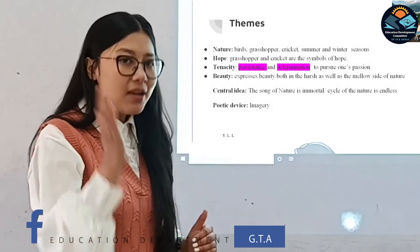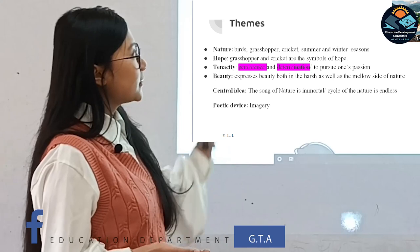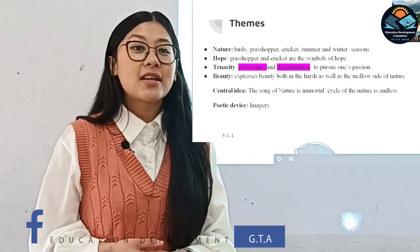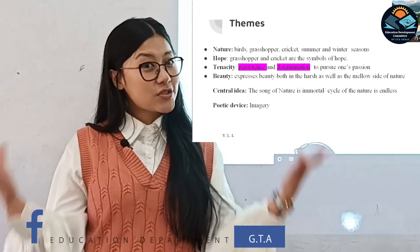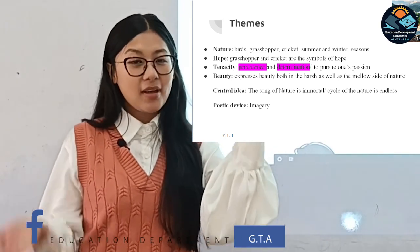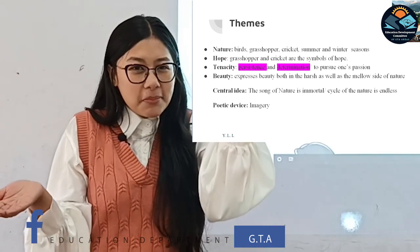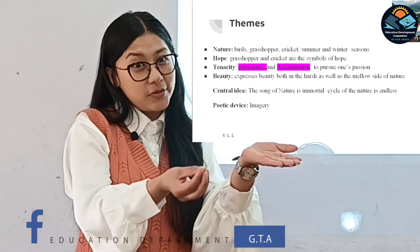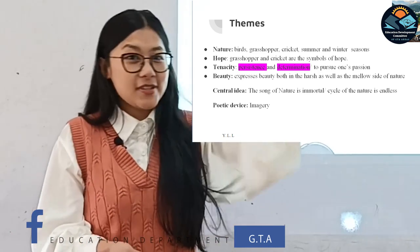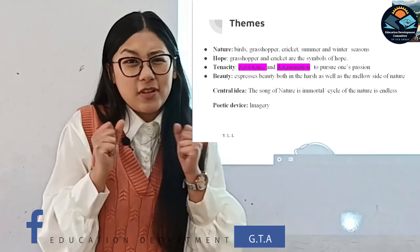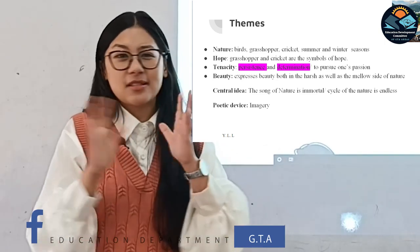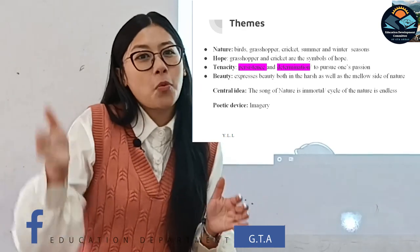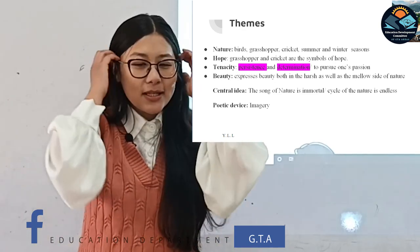Symbolically, the grasshopper and cricket are symbols of hope. Keats has presented two extreme seasons — summer and winter. In the heat of summer when you don't feel like doing anything, it is the grasshopper who comes as hope and enlivens the atmosphere. In winter, when the harsh cold has completely put you down, it is the voice of the cricket that adds warmth.